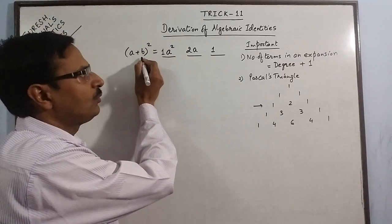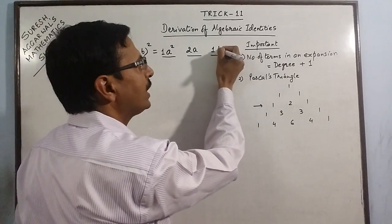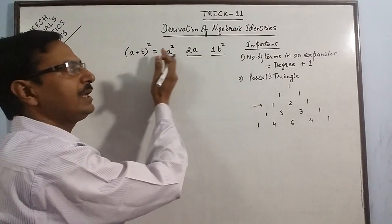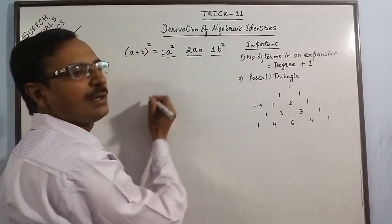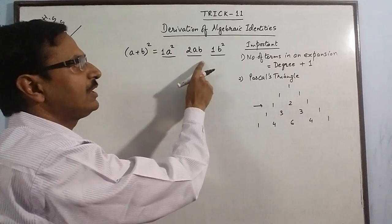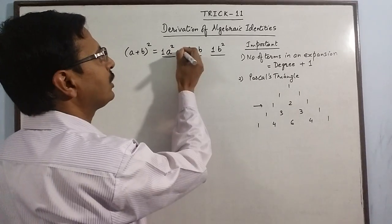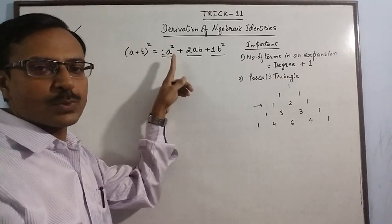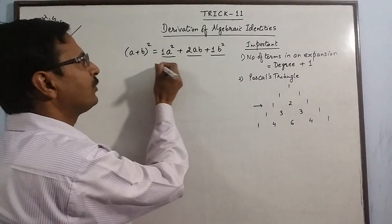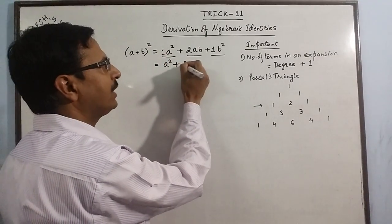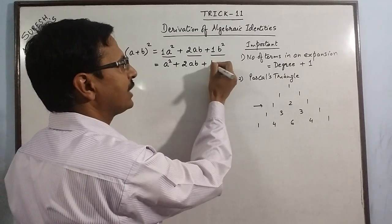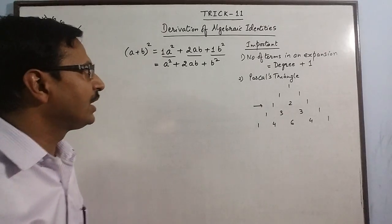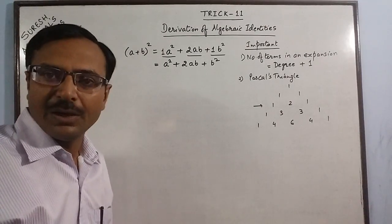The second variable is B. We start with B squared in the last term and keep on reducing the degree of B by 1 in each preceding term. So the last term has B squared, the middle term has B, and the first term has no B since its degree would be 0. Between all terms we put positive signs, because in the expansion of A plus B whole square there are no negative terms. We remove the explicit 1 coefficients and arrive at: A plus B whole square equals A squared plus 2AB plus B squared.